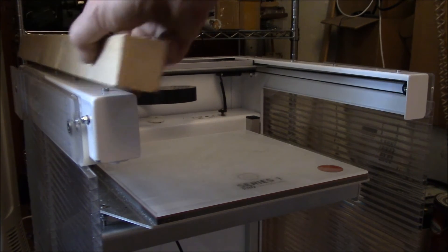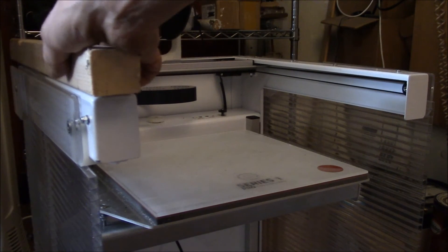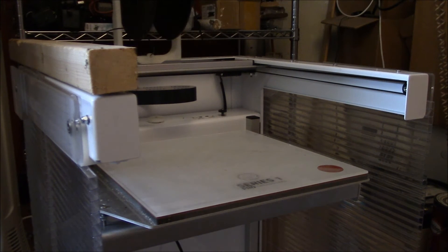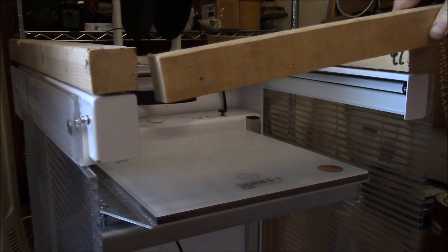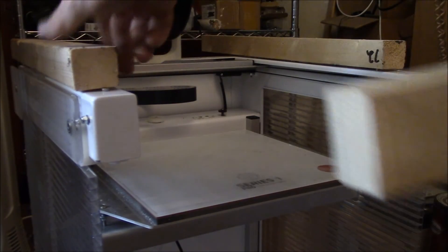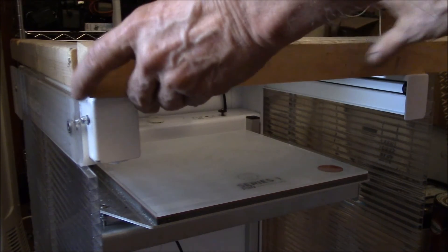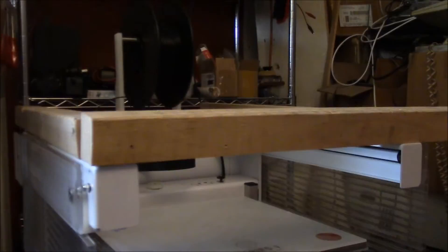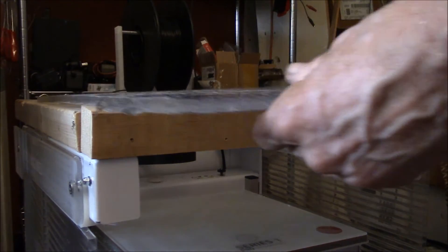I've got a couple of scrap two by twos - these came from my last shipping crate. I just want to build a simple frame around the front here. I'll probably slide those back, put that across the front, and then I'll put this piece on top here.